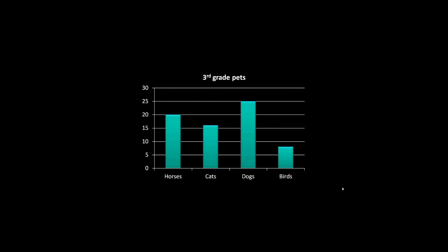Here's one other bar graph I want to show. This shows how many pets our third graders have and what types. Dogs is obviously the most popular, then horses, then cats, then birds. The first thing to look at is the scale: five, ten, fifteen, twenty, twenty-five, thirty — so we're counting by five. The scale of this graph is five.